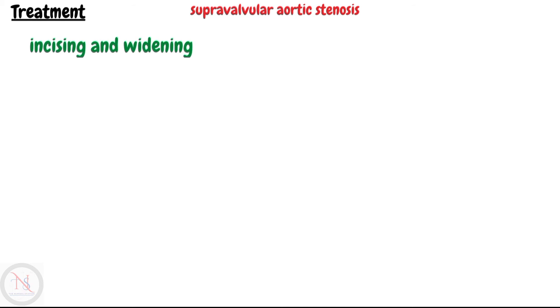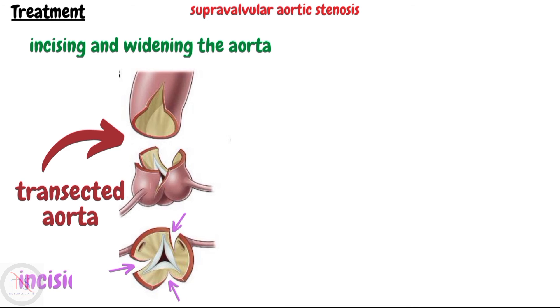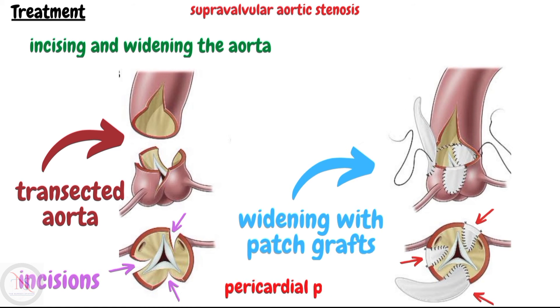Supravalvular aortic stenosis is repaired by incising the narrowed segment of the aorta and widening the area with a patch graft. The aorta is transected at its narrowest point and three incisions are made as shown. Then three pericardial patches are used to enlarge the constricted area.